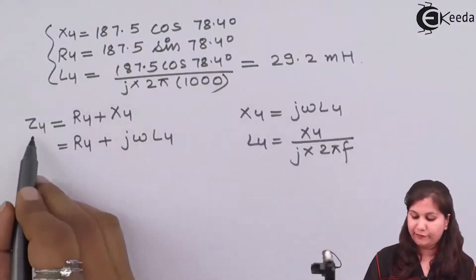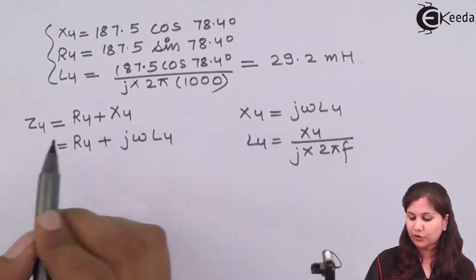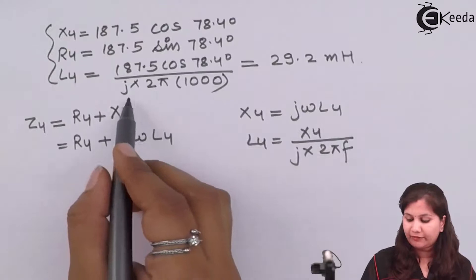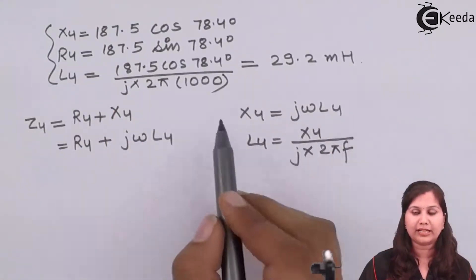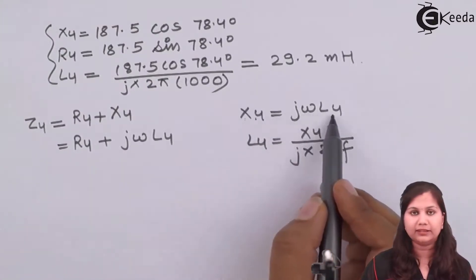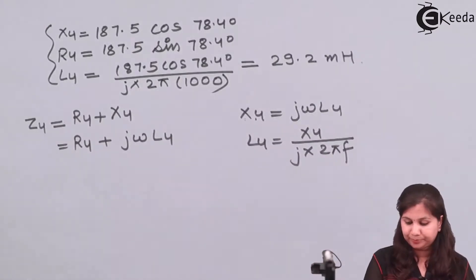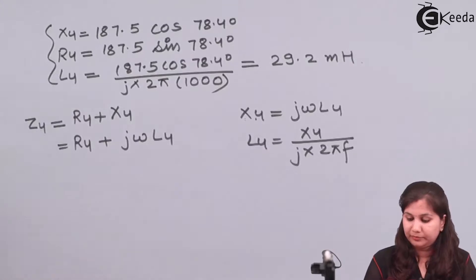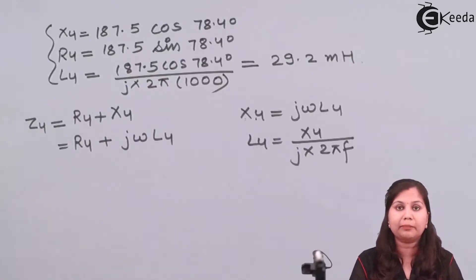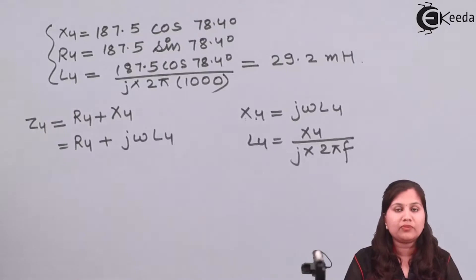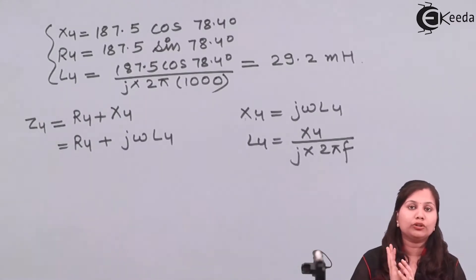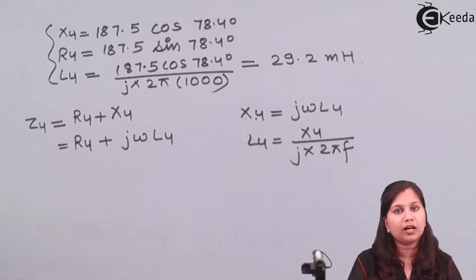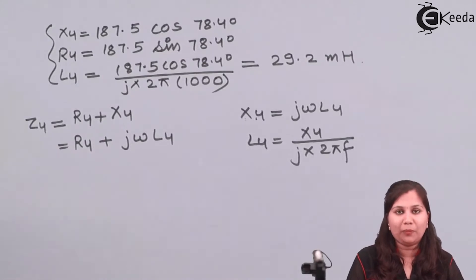We have calculated Z4 as a series combination of resistance and inductor, where X4 = jωL4 is the inductive reactance. This is how we find the unknown impedance using the general balance equation of an AC bridge: Z1·Z4 = Z2·Z3. For any problem requiring an unknown impedance, put in the known values and solve. I hope this problem is clear to you.